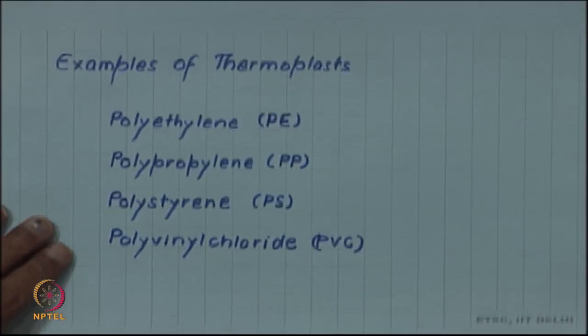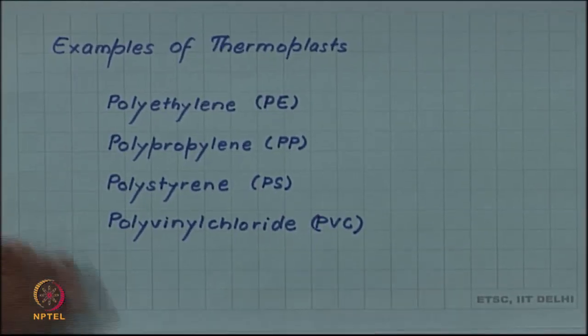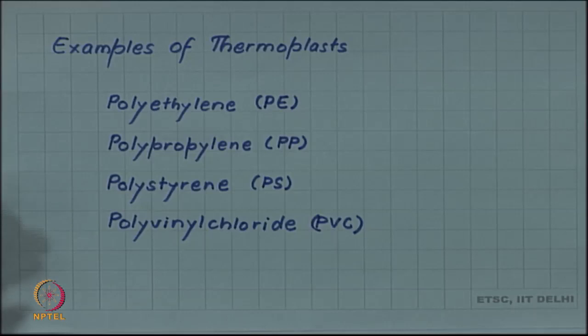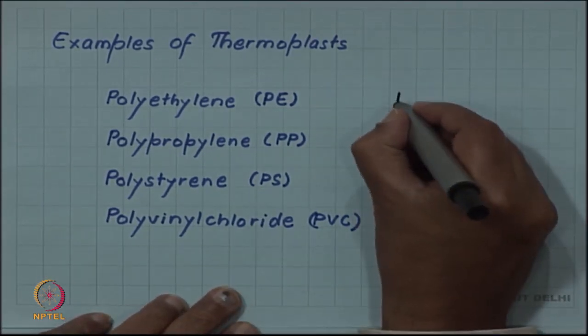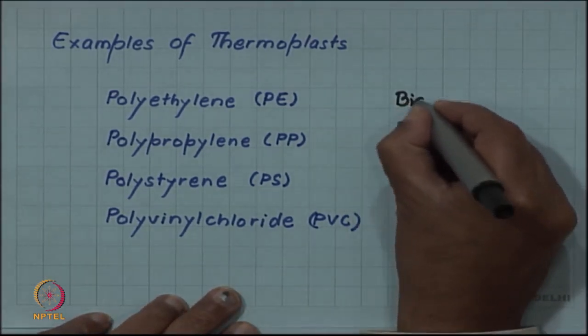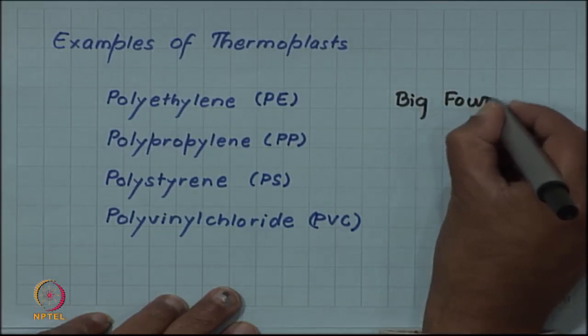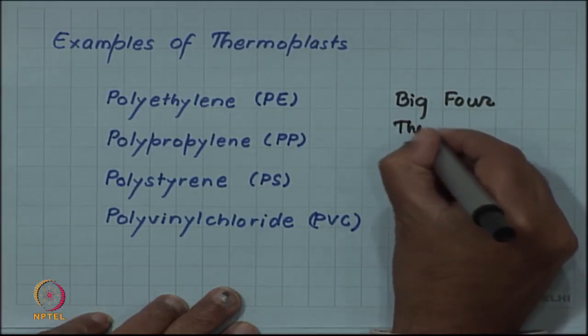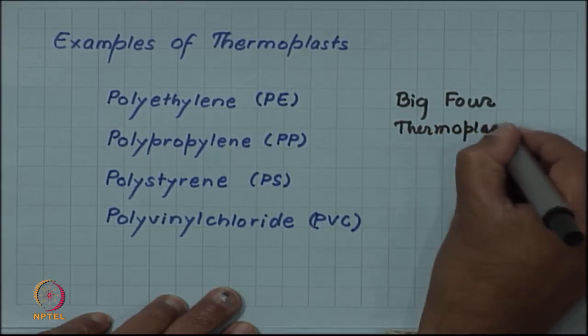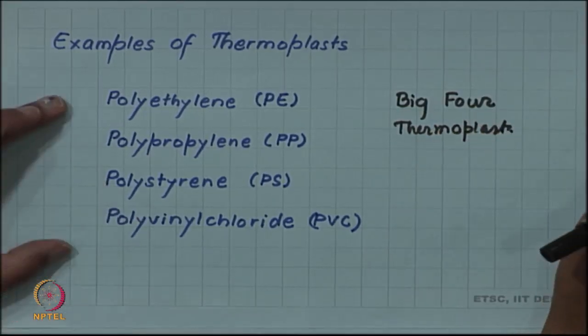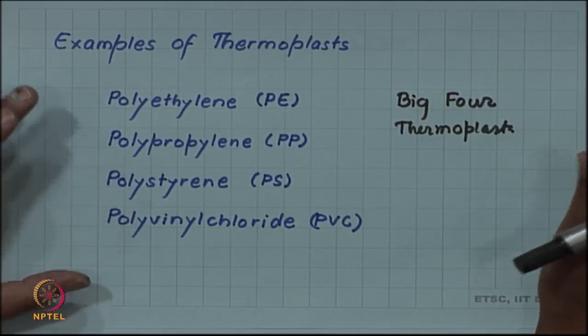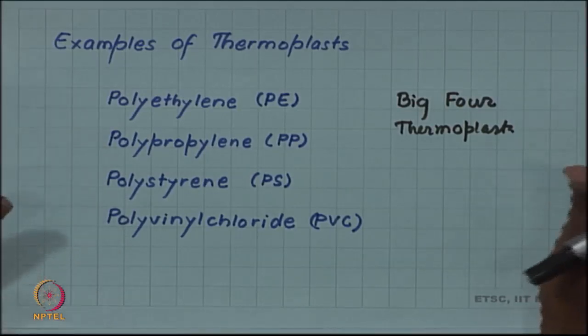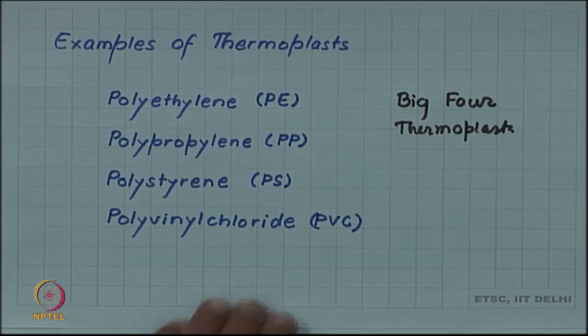Let us look at some example of thermoplasts. All the vinyl polymers which we were talking about are actually thermoplasts and four of the most important, the so-called big four thermoplasts: polyethylene, polypropylene, polystyrene and polyvinyl chloride. They actually constitute about 85 percent of the thermoplasts market.